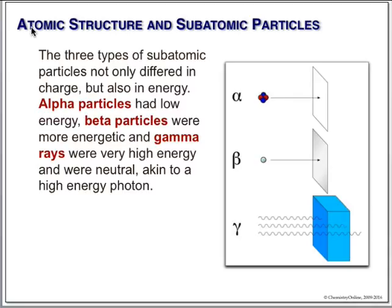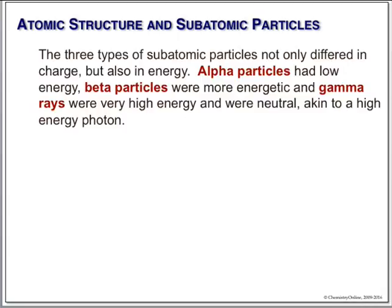Beta particles are much more energetic. Beta particles can go all the way through about a centimeter of lead. Every radioactive isotope will have a different energy for the beta particle it emits. But they can get up to a centimeter of lead before you can stop them. Gamma particles are very, very intense, high energy, neutral - essentially a very high energy photon. It's like a ray of light, except very high energy, and they can go through 10 centimeters of solid lead. Alpha particles are low energy, beta particles are more energetic, gamma rays are very high energy.